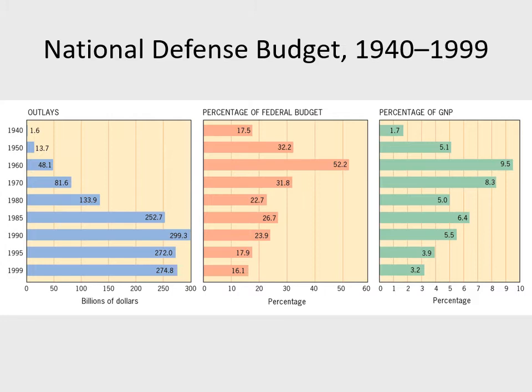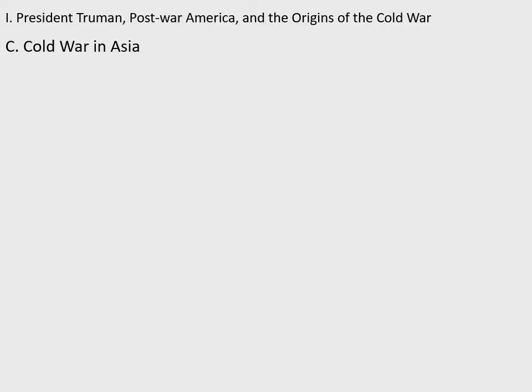Looking at the defense budget chart: the left shows actual billions of dollars, the middle in red shows percent of the budget, and green on the far right shows percent of GNP. Defense spending drastically increases from 1940, peaking in 1990 — remember the Cold War ends in the early '90s. In 1960, more than 50% of our federal budget is being spent on national defense, with 9.5% of GNP. Even though we spend more money going into the future, it becomes a lower percentage because the United States is just making more money overall.